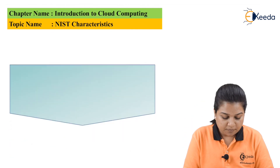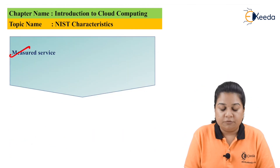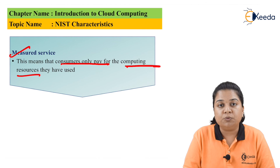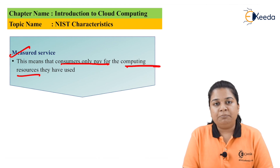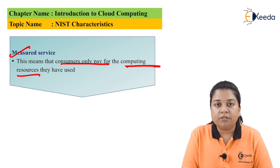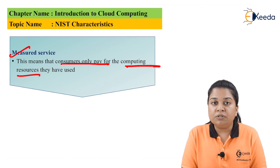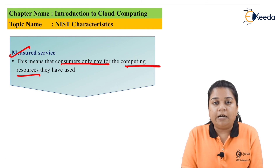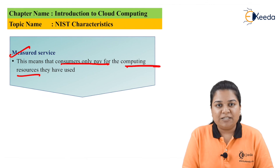The last characteristic is measured service. This means consumers only pay for the computing resources they have used — similar to electricity, where you only pay for the consumption, not for all the electricity generated. In the same manner, in cloud computing we only pay for the usage. It is measured how much service you have used and the user is billed accordingly. Thanks for watching this video, stay tuned and subscribe.